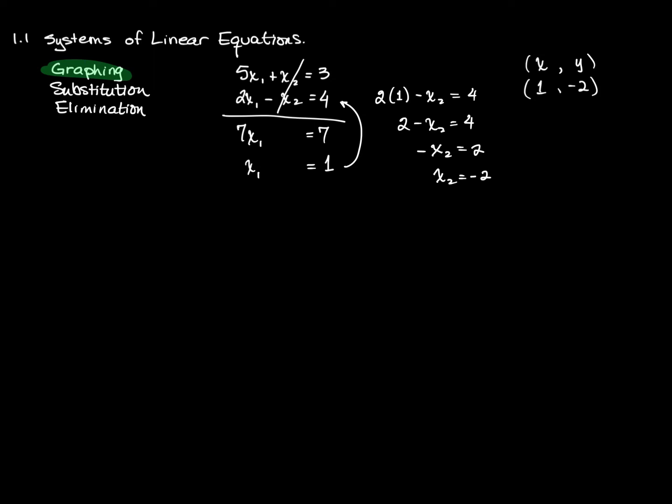Why do we write it in coordinate pairs? And again, you'll probably recall from algebra, and this is how this particular lesson started anyway, that what these two numbers represent are the coordinates of a point, right, on a two-dimensional plane. So if I plot the point 1, negative 2, that's about there, that is the solution to this system of equations.